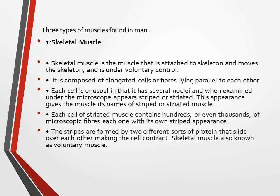Skeletal muscle is composed of elongated cells and fibers lying parallel to each other. Each cell is unusual in that it has several nuclei, and when examined under the microscope, appears striped or striated. This appearance gives the muscle the name 'striated muscle.' Each cell contains hundreds or even thousands of microscopic fibers. The striations are formed by two different sorts of protein that slide over each other, making the cells contract. Skeletal muscles are also known as voluntary muscles.